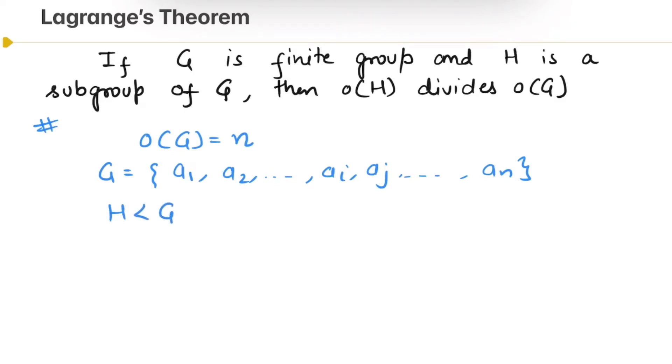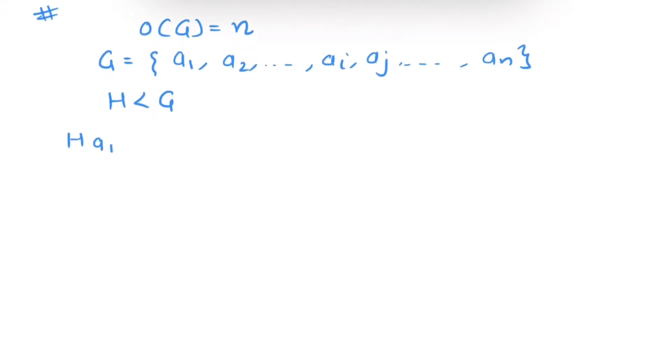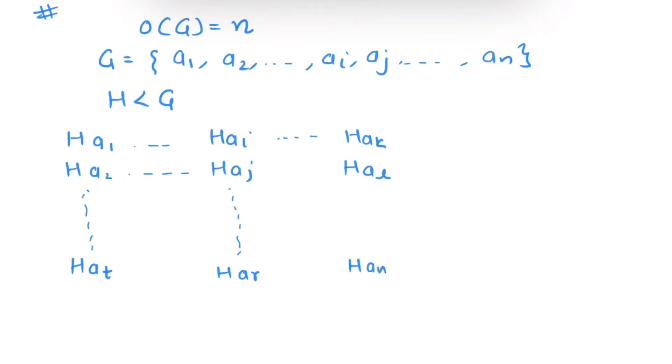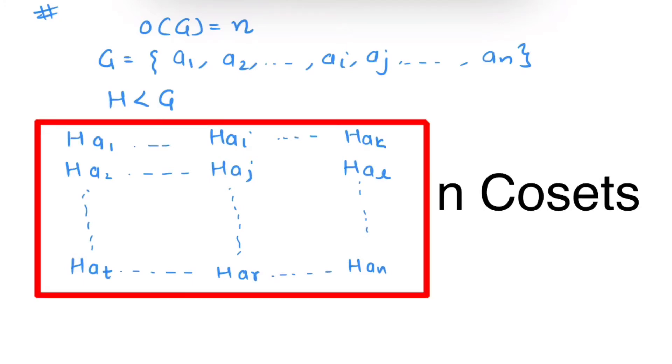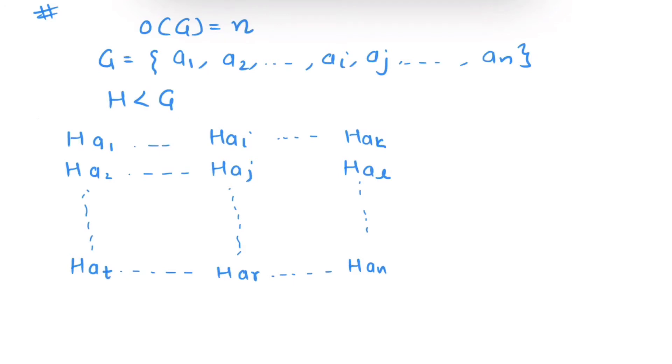Now let's form cosets corresponding to each element of G. So cosets are Ha1, Ha2, and so on. These are all the cosets. In the previous video, we have seen cosets are either identical or disjoint. Now let's categorize them into identical and disjoint cosets.